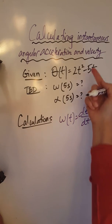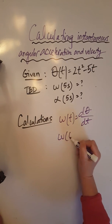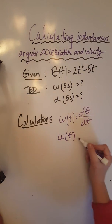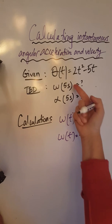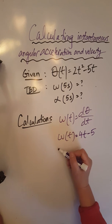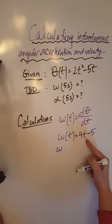So we take the derivative of 2t squared minus 5t, which is 4t minus 5, and then if you want it at exactly 5 seconds we plug in 5 seconds for t.